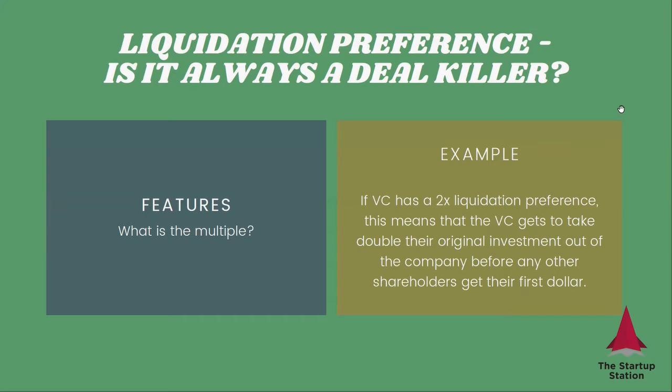So let me give you an example. Let's say that the VC put in $1 million for a 10% stake of the company, and the company gets sold for $10 million, and their liquidation preference is two times. If there wasn't a liquidation preference and their stake is 10%, on a $10 million exit, they would just get their $1 million back. However, if they have a two-times liquidation preference, it would actually mean that they will get $2 million, and then the remaining $8 million will get determined based on the remaining equity ownership.